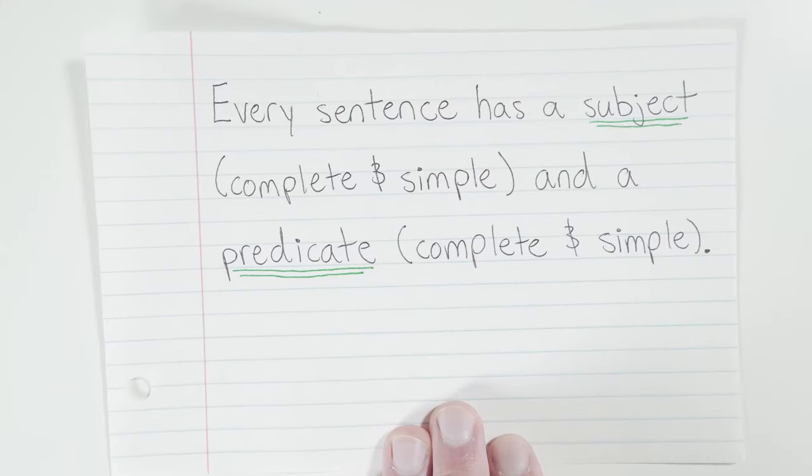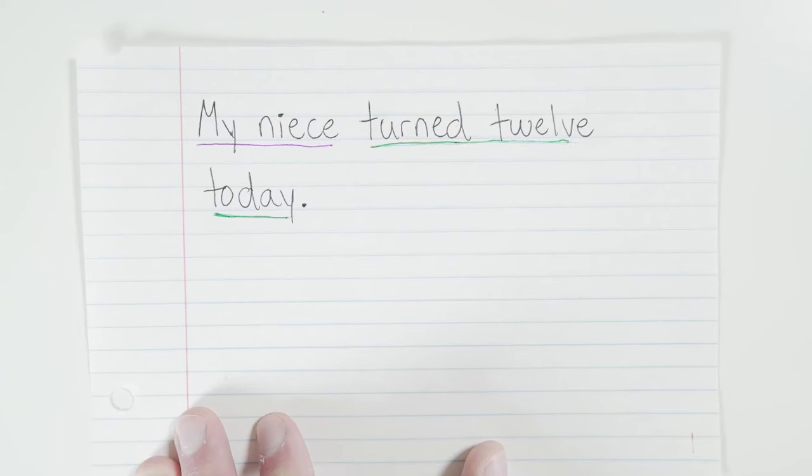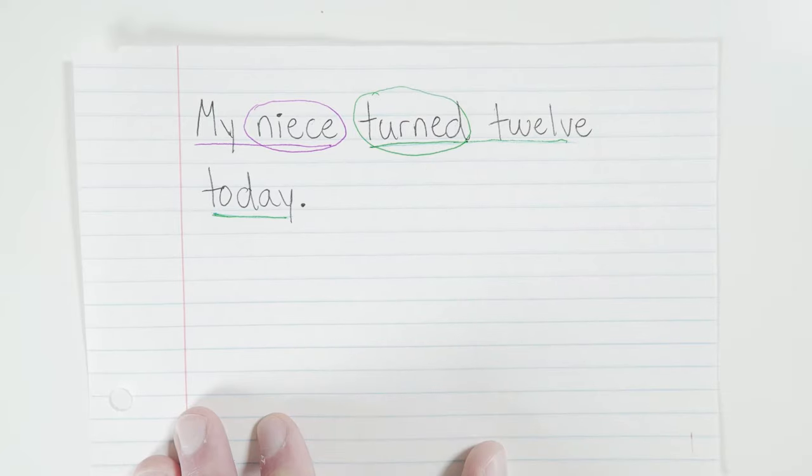Okay, so we know that every sentence has a subject and a predicate, a complete and simple subject, and a complete and simple predicate, to be exact. And usually the subject comes first and the predicate comes last, like this. My niece turned 12 today. Complete subject is my niece, simple subject is just niece. Complete predicate is turned 12 today, and the simple predicate is just turned. Cool. Easy, right?